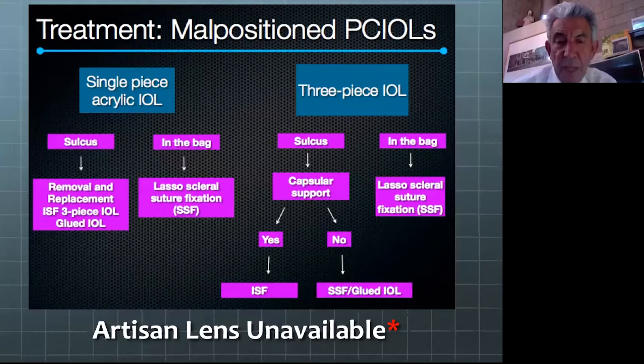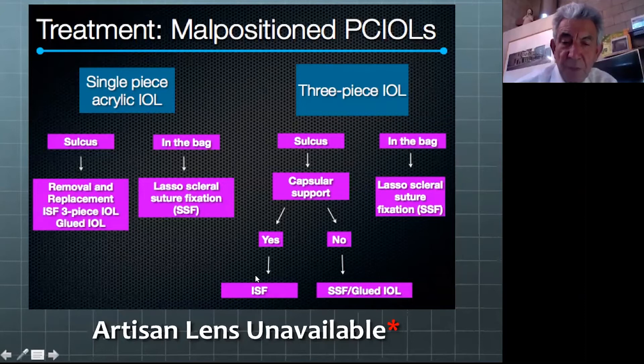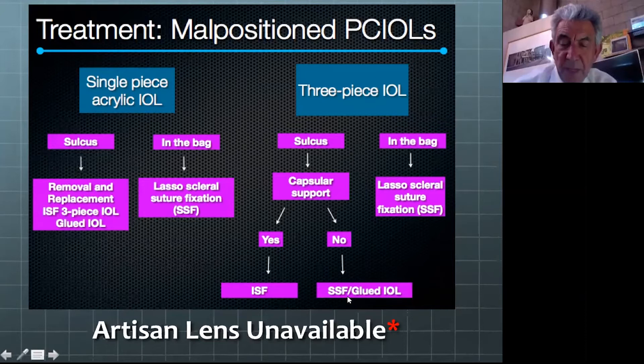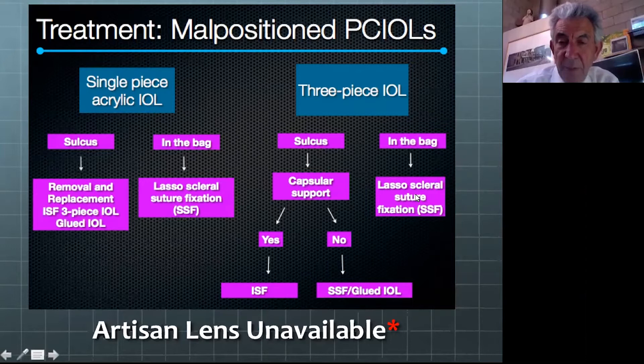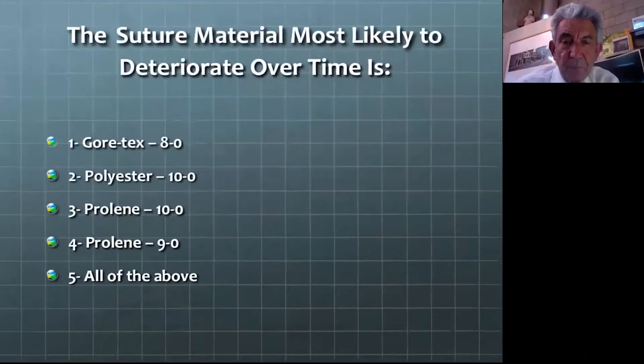A single-piece acrylic in the bag can be lassoed to the IOL. If it's a three-piece lens in the sulcus with adequate capsule support, we prefer iris suture fixation. Without capsule support, the lens may have a tendency for late malposition even with iris sutures, so we will fixate it to the sclera using either the glue technique or the Yamani flange technique. If it's in the bag, we can lasso it through the bag with scleral suture fixation.